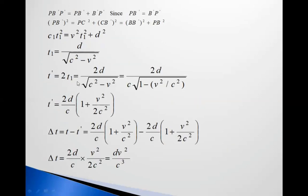The total path is twice T1, so T' = 2T1 = 2D/√(C²−V²) = (2D/C)·1/√(1−V²/C²). Using the binomial approximation, T' = (2D/C)(1 + V²/2C²). Therefore, ΔT = T − T' = (2D/C)(1 + V²/C²) − (2D/C)(1 + V²/2C²), which gives ΔT = DV²/C³.